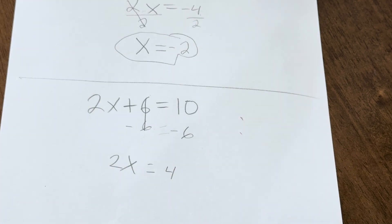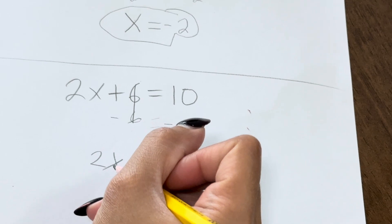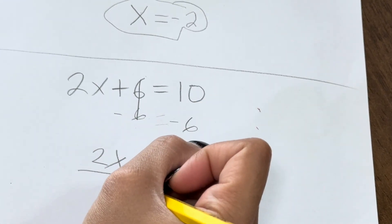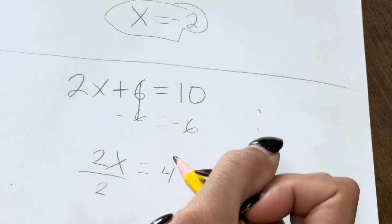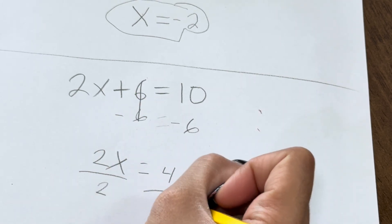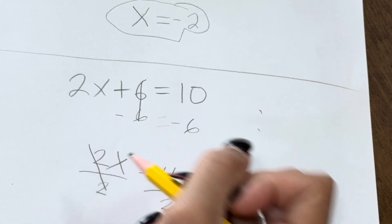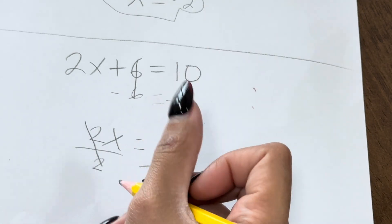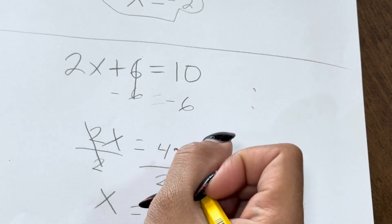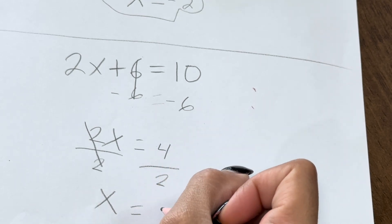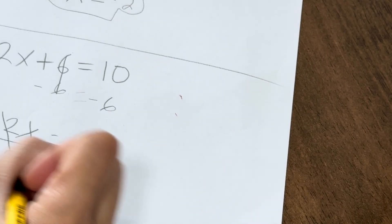How do you get the x by itself? What do you have to do? Divide by 2, right? And you have to do it to the other side also — both sides. And then you cross out the 2s. And then x equals 4 over 2, which is 2. And then you circle your answer. That's it.